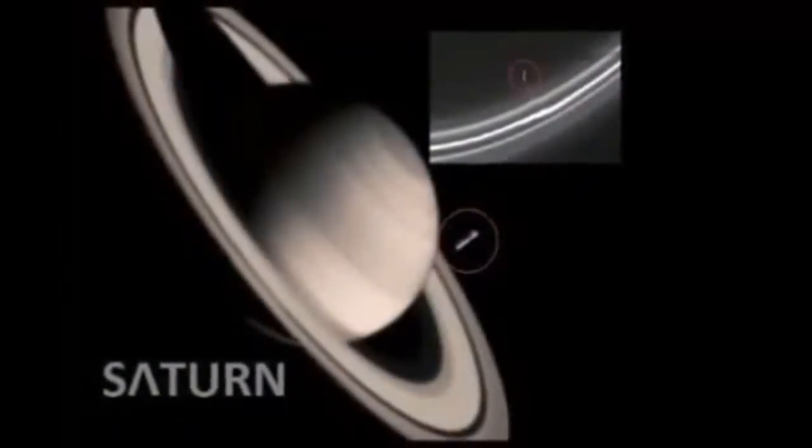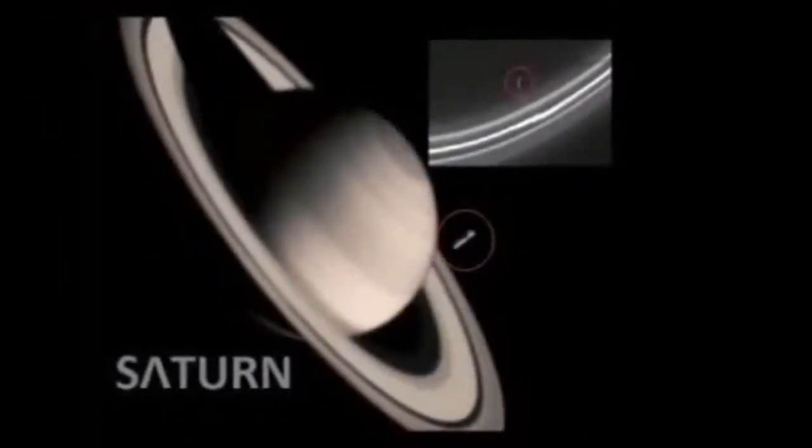One of the last images taken by the Cassini space probe has shown something mysterious in the rings of Saturn. Are they aliens? Not really, but it would be really exciting, says NASA.